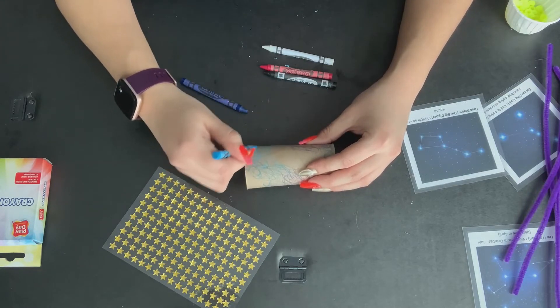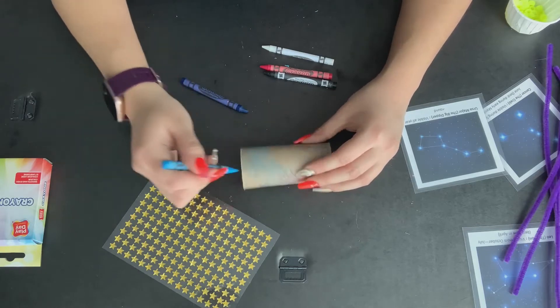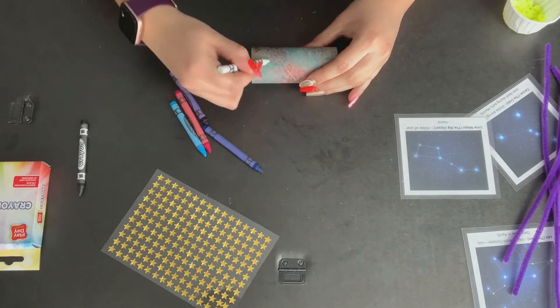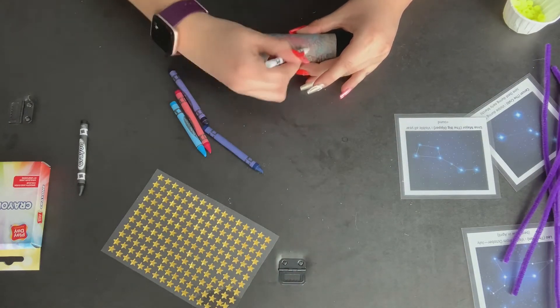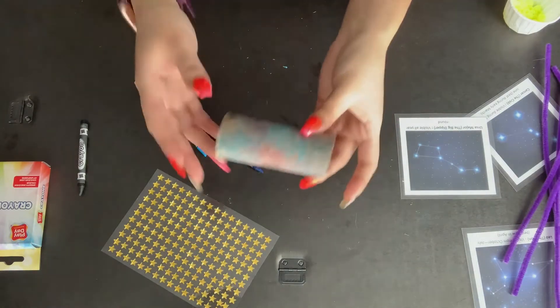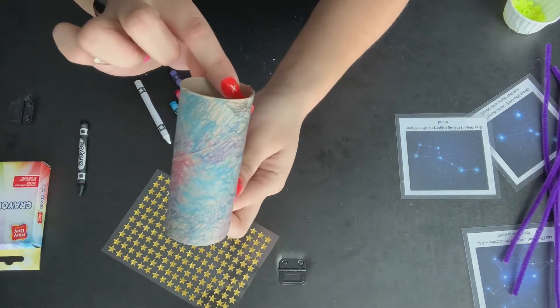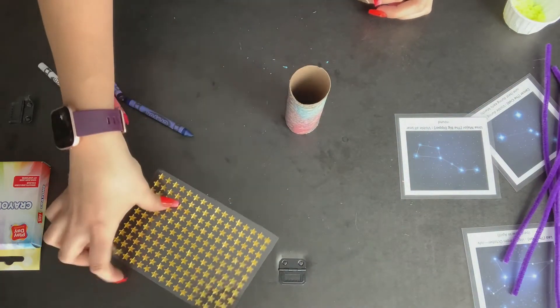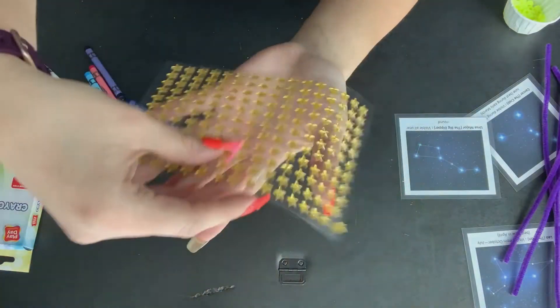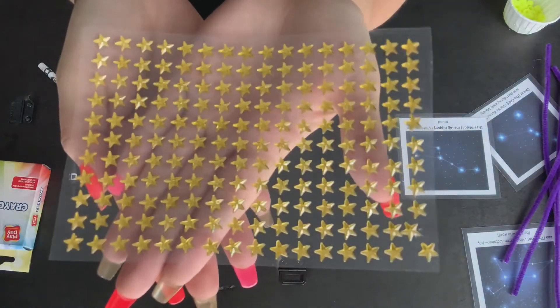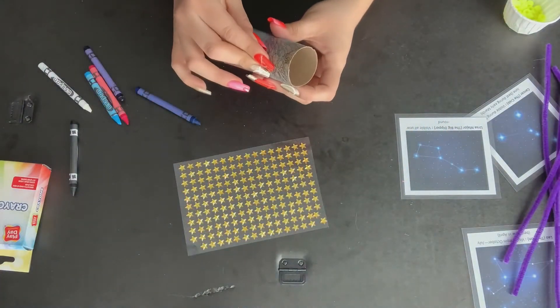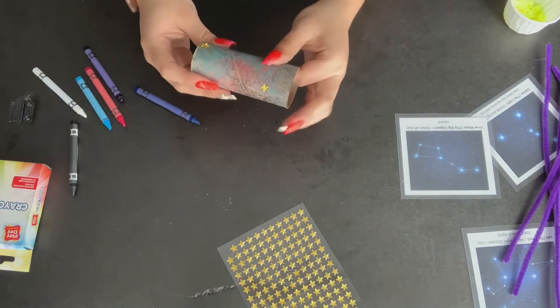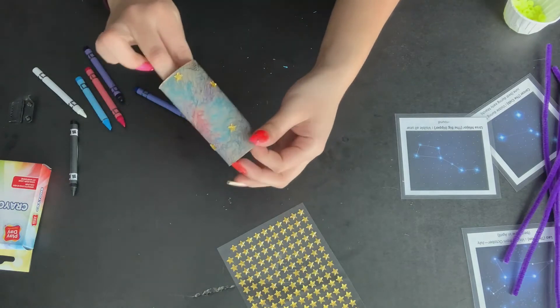And you can decorate yours in any way you'd like. And once I finish adding my final touches to my tube, I'm going to finish up by adding my gold star stickers. These will really make my gazer look like the night sky. I'm just sticking those on for some final touches to my stargazer. And once it's done, I have a stargazer ready to go.